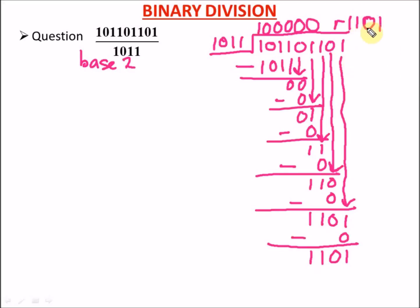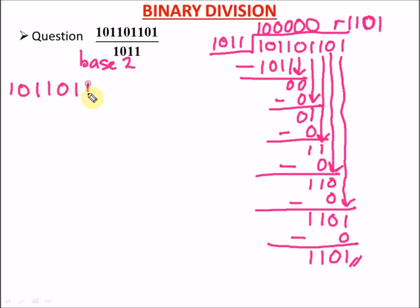So we have quotient 1000000 and remainder 1101. Now we need to prove that our answer is correct. In the previous video we did the same — when you finish, you prove your answer. To do this, we convert these binary numbers from base 2 to base 10.